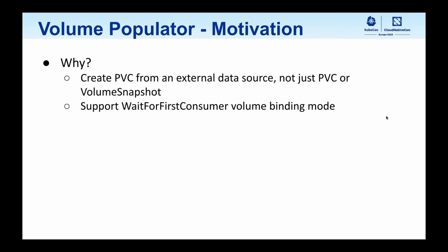Moving on, we are going to cover volume populator. This is another component needed in the restoration path. When we create a PVC from some external data source, we used to limit which data sources we could rehydrate a PVC from — it used to only support volume snapshots as well as another PVC. Volume populator is designed to allow backup systems to plug in any format for their volume backup mechanism to rehydrate the PVC. This is now also supporting the 'wait for first consumer' binding model.